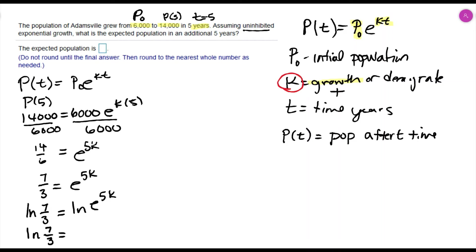Because I've introduced the log, now I can use the power rule and bring this power out front. That's 5k natural log e. Natural log e is equal to one.